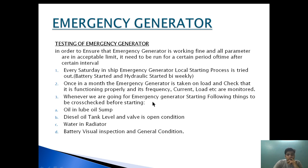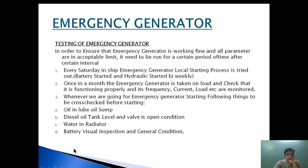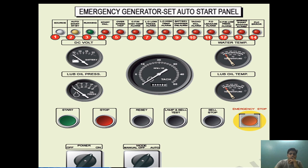Before starting the emergency generator, we check the following: oil in the lube oil sump, diesel oil tank level, water in the radiator — because the cooling method for the emergency generator is by radiator — and battery visual inspection and general condition. We check sufficient oil in the sump, that the diesel tank is almost full, and that the radiator has water. Battery visual inspection checks for any leakage, confirms batteries are in good condition, and that terminals are properly greased.